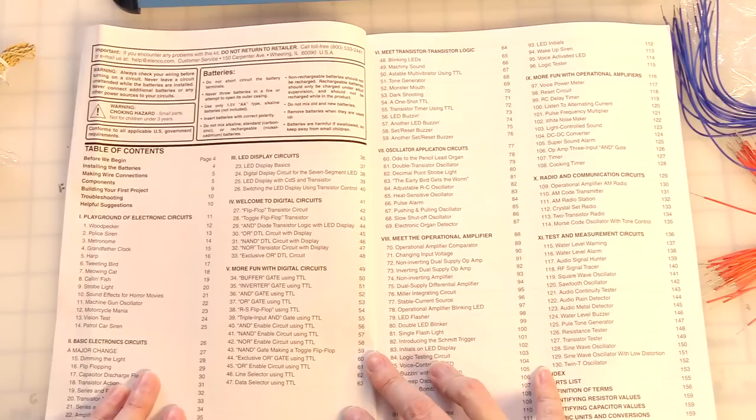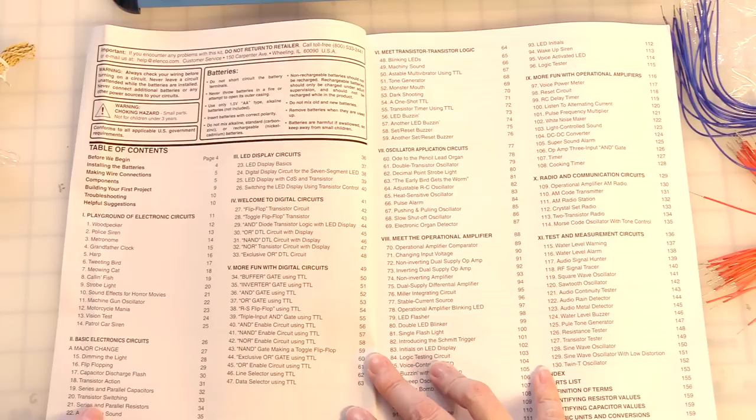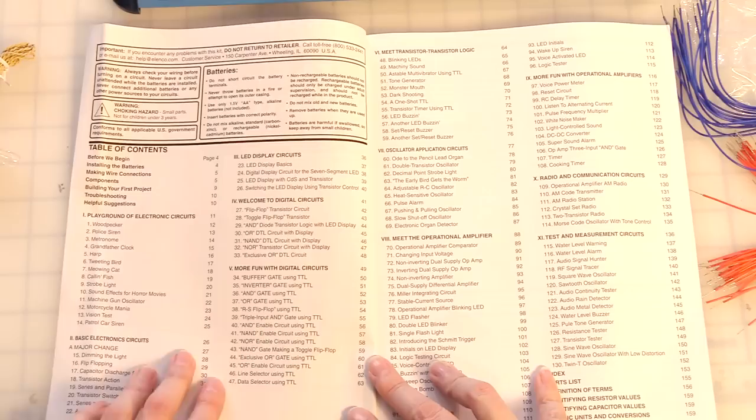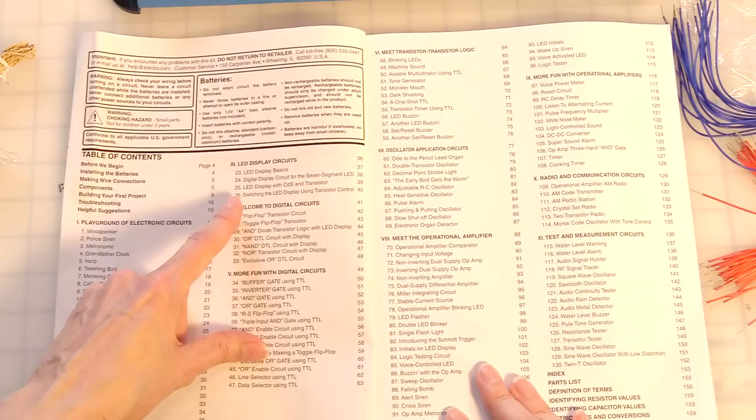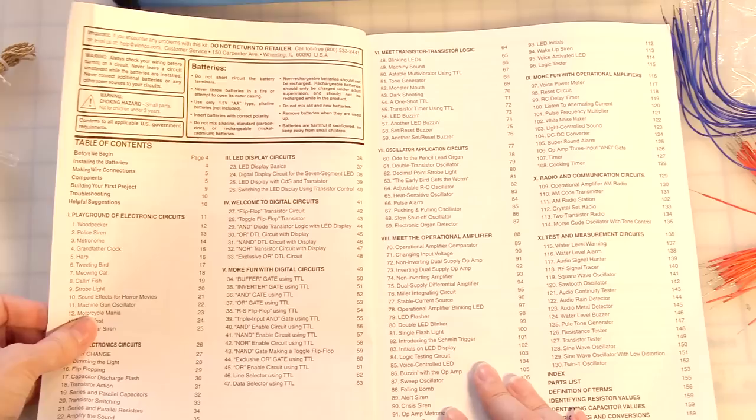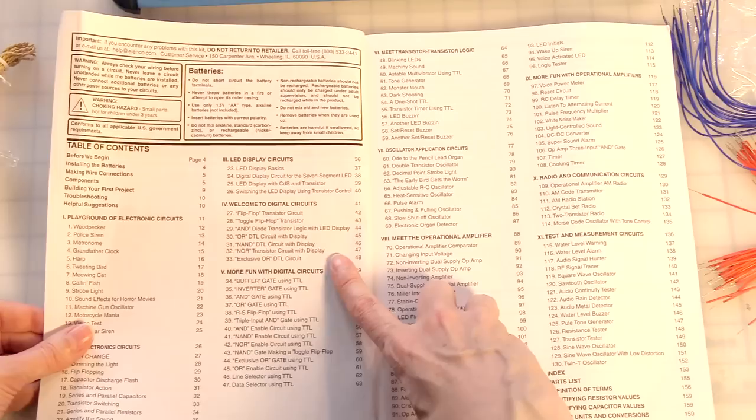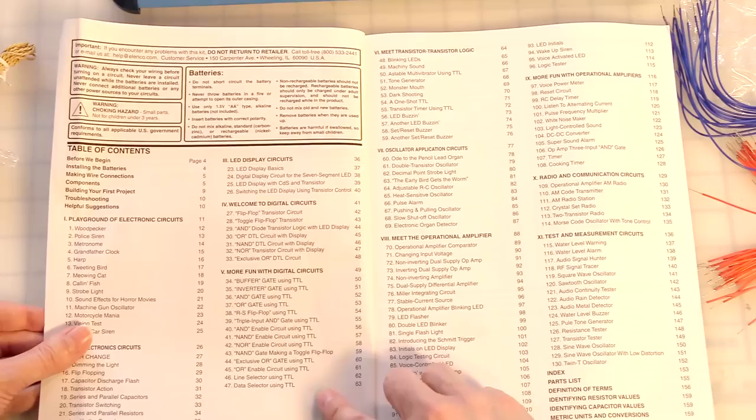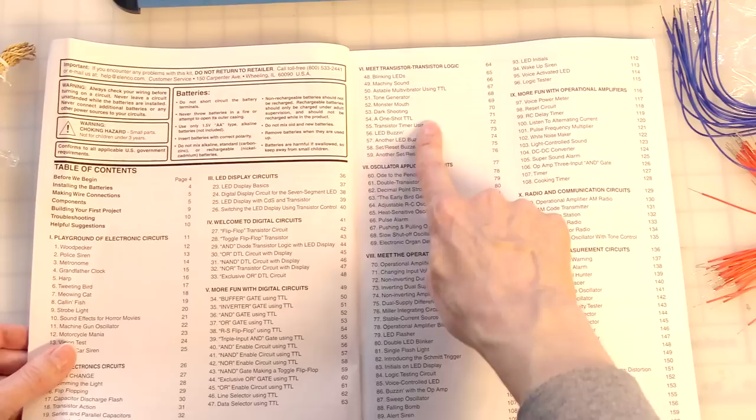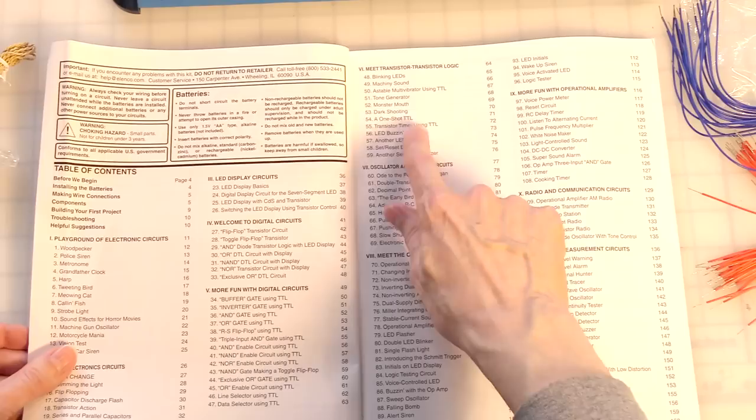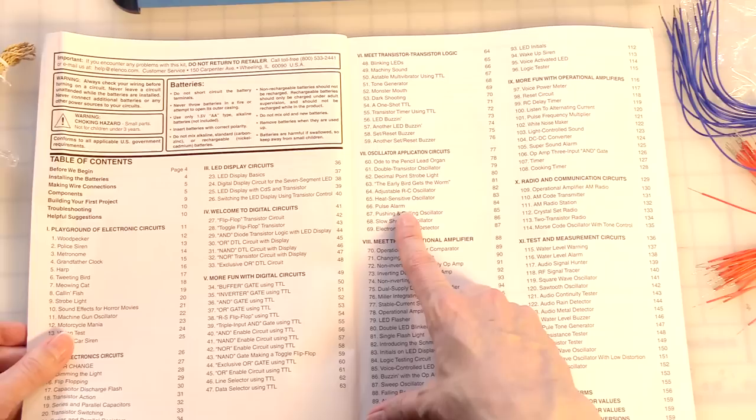Basic electronic circuits. Dimming light. Flip-flopping. Transistor action. Transistor switching. Sound amplifiers. That's pretty cool. LED display circuits. LED display basics. Display with the photocell and the transistor. Okay. Switching LED display using transistor control. That's pretty cool. Flip-flop stuff. Logic. Fun with digital circuits. More and more and more logic. Really using that NAND gate chip. Meet transistor transistor logic. All right. TTL stuff. LED buzz-in. Oscillators with TTL. One-shot. All right. So this is pretty cool.